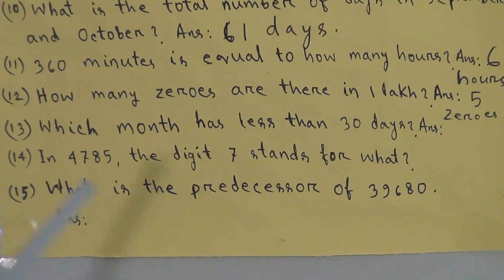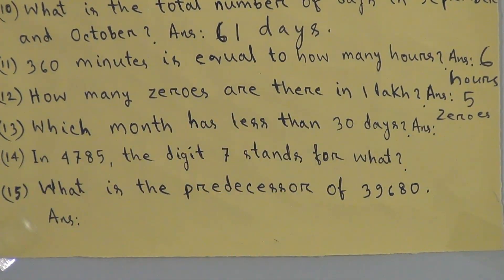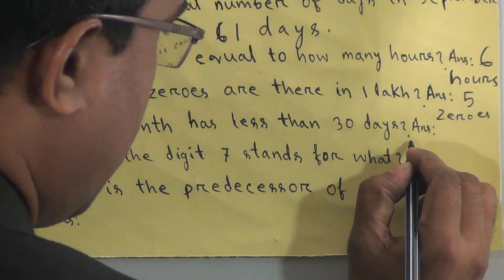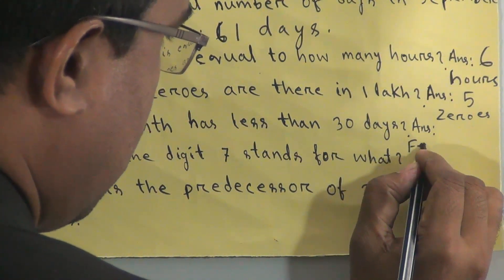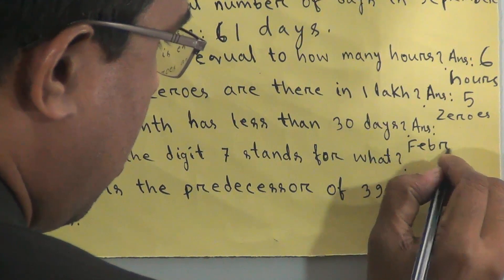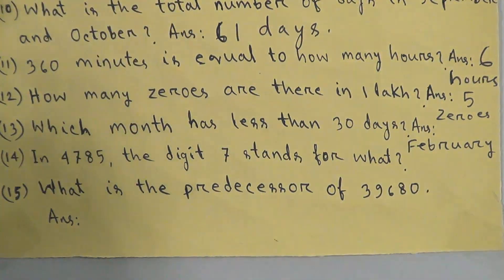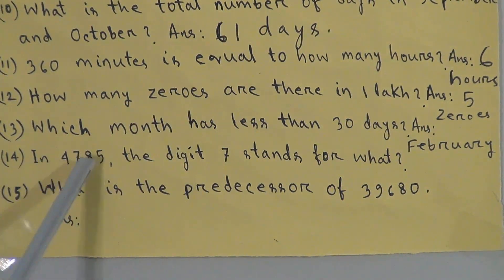Question 13: which month has less than 30 days? Among the 12 months, only February has less than 30 days. The answer is February.